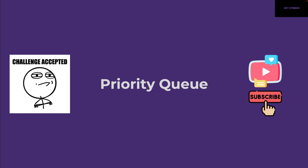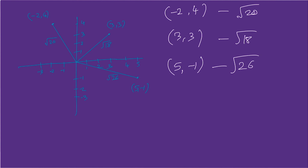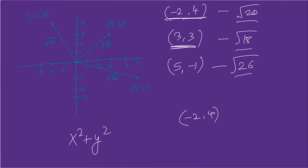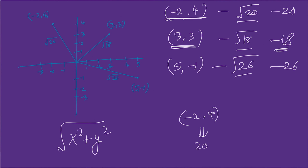Next, let's use a priority queue. Given three coordinates [-2,4], [3,3], and [5,-1] with their Euclidean distances, we start by inserting the first point [-2,4]. The comparator calculates the Euclidean distance from the origin without the square root, so [-2,4] gives 20, [3,3] gives 18, and [5,-1] gives 26. When we insert [3,3], its distance of 18 is smaller than 20, so it moves to the front of the queue.